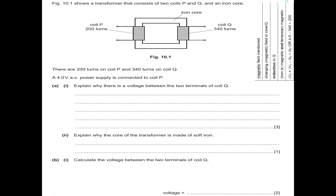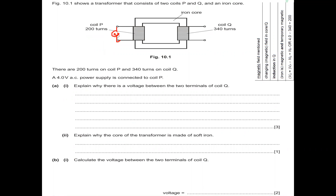Another question: primary coil P has 200 turns and coil Q has 340 turns. A 4 volt AC supply is connected to the primary. Since the secondary has more turns than the primary, this is a step up transformer, so we can predict without calculation that the output voltage will be higher than the input.